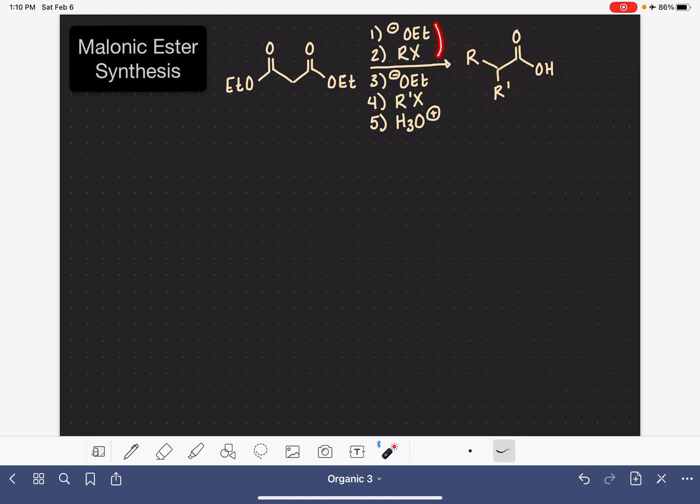There's a total of up to five steps in this reaction. Steps one and two are repeated if you would like to add two alkyl groups to the alpha carbon of the carboxylic acid. If you only wanted to add one alkyl group, you would not need steps three and four. You would only need steps one and two, and then the last step, H3O+.